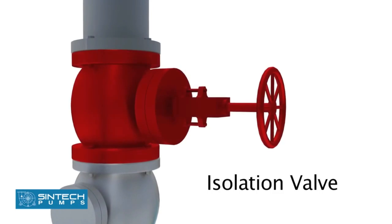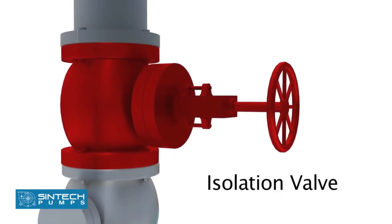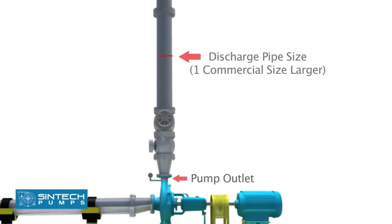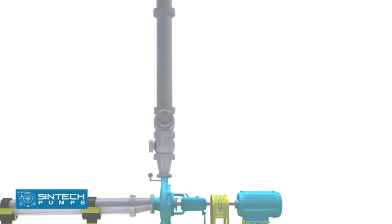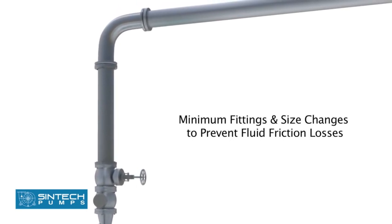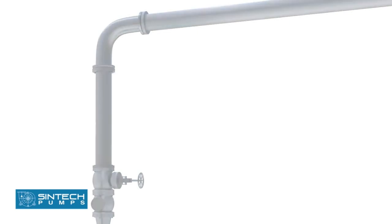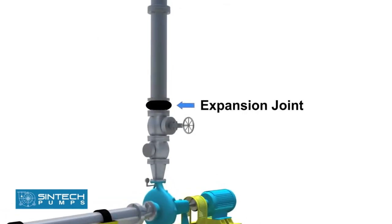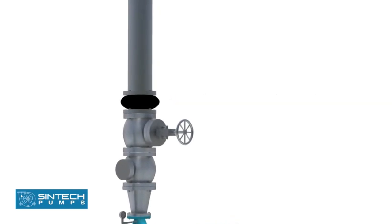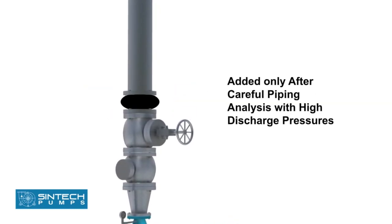The isolation valve is provided downstream of the check valve so that these can be taken up for servicing whenever required. Discharge pipe size should be at least one commercial size larger than the opening of the pump outlet. The number of fittings and size changes should be minimum to prevent fluid friction losses. Expansion joints may be used only after a careful piping analysis, especially when the discharge pressures are on the higher side.